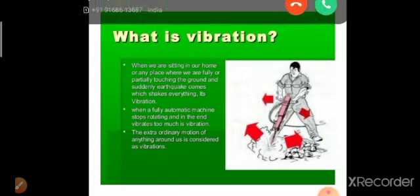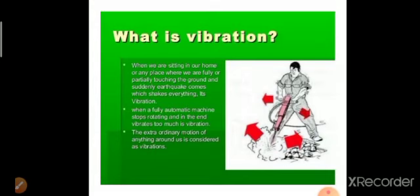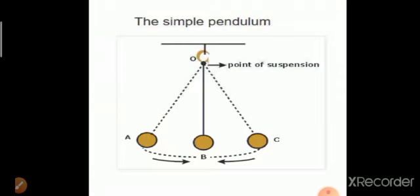The extraordinary or extra motion of anything around us is considered as vibration — this is the main definition. A good example is a simple pendulum. Suppose we have a simple pendulum attached to a fixed support, with a string and a bob. The position B of that bob is called the equilibrium or initial position. When we give a small displacement to bob B, it will displace to point C or point A.